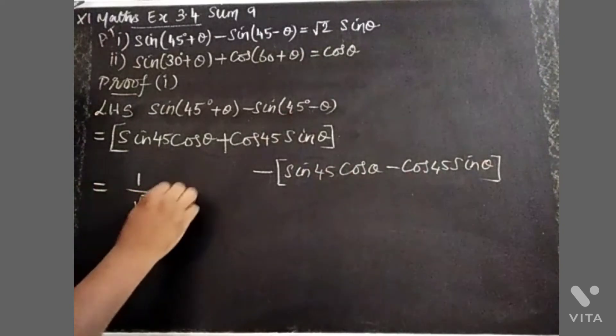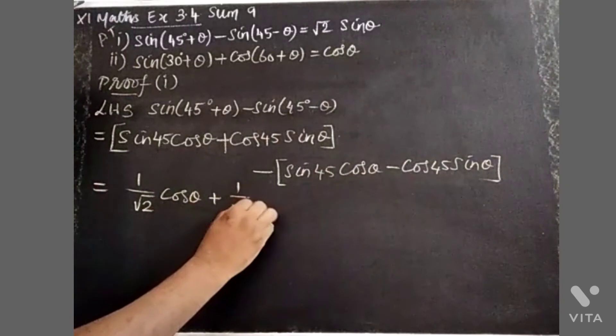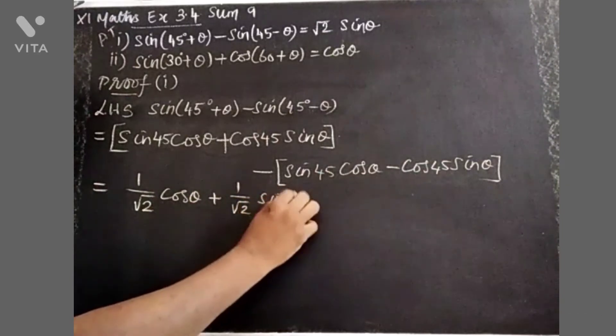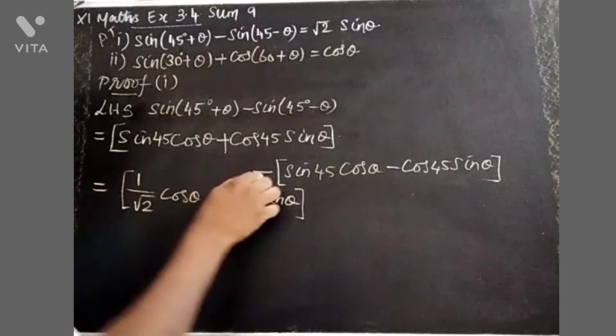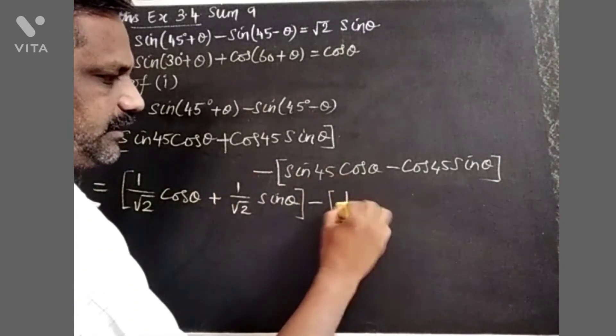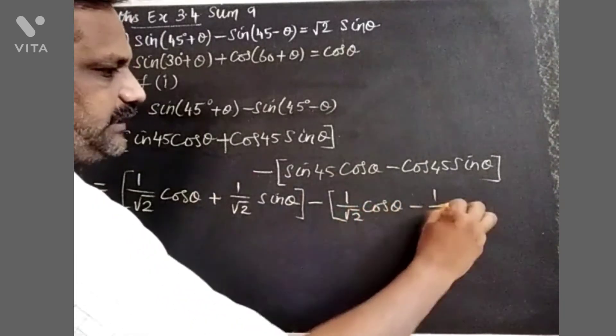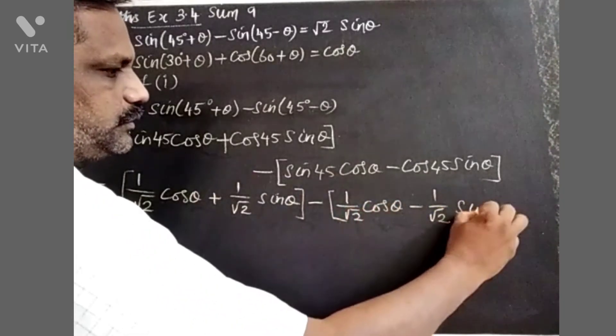Now substituting the values: sin 45 equals 1/√2, and cos 45 equals 1/√2. So we get 1/√2 cos θ and 1/√2 sin θ.